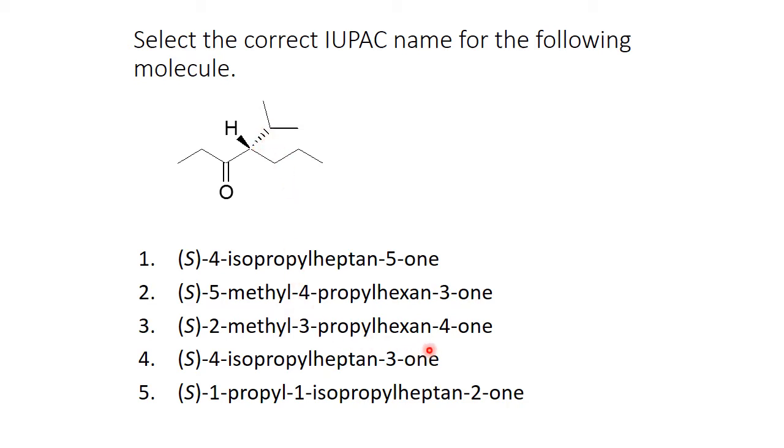So on the number 4, we've got either an isopropyl or we can also call it a 1-methyl ethyl, but that's not down here. So if I look down here, I see there is a heptan-3-one, 1, 2, 3, or we can call it a 3-heptanone, and on the number 4 is the isopropyl group. So the correct answer is this one.